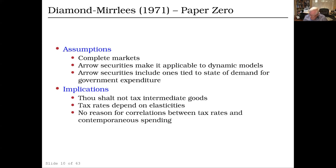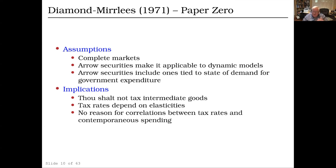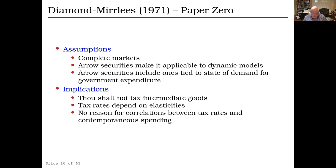In a literature review on optimal taxation, I always want to include Diamond-Mirrlees. It's paper zero in the optimal taxation literature. It assumes complete markets — arrow securities make it a dynamic and stochastic model even when the notation looks static. Arrow securities could be tied to shocks or shifts in taste for government spending. The key result is only tax final goods, not intermediate goods. Tax rates depend largely on elasticities and are not going to depend on contemporaneous government spending — fluctuations in spending are dealt with by trading in arrow securities and risk markets. So it's not compatible with the history.